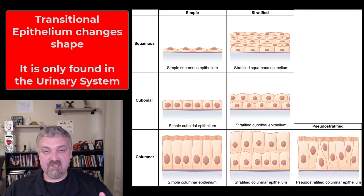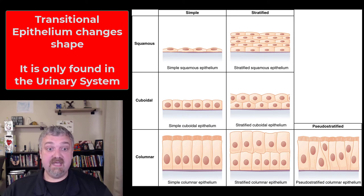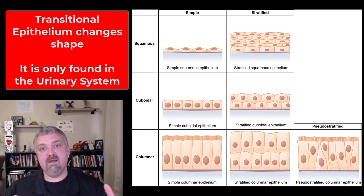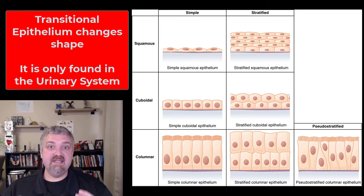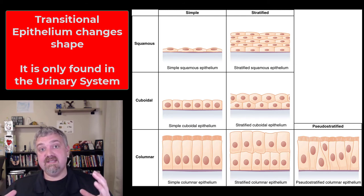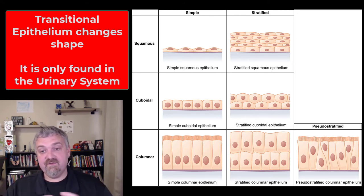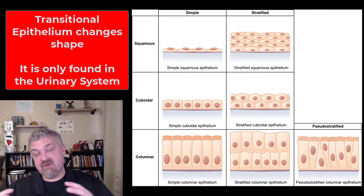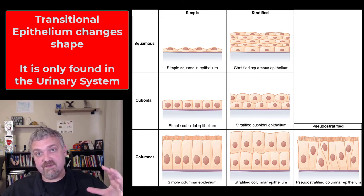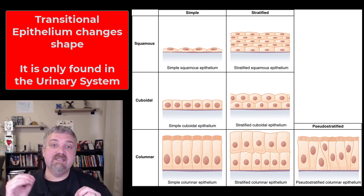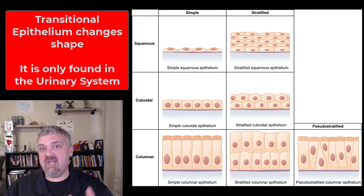The only one you don't see on here is transitional. Transitional epithelium, like the name implies, is going to transition — it looks different depending on what's going on. You're going to see this in the urinary system. The cells bunch together when the bladder is empty, for example, but then they stretch and thin out as it fills up. So transitional epithelium can change its shape depending on what's going on.